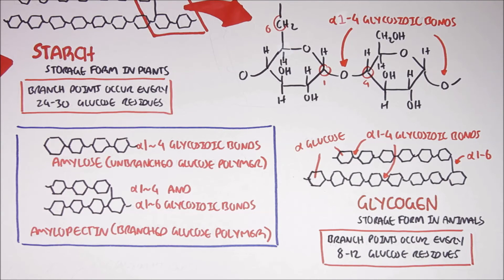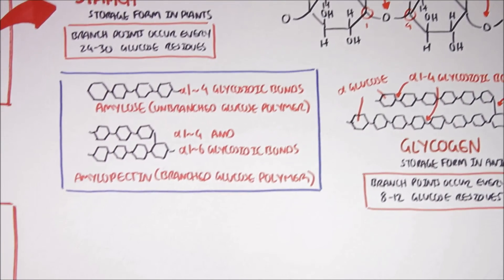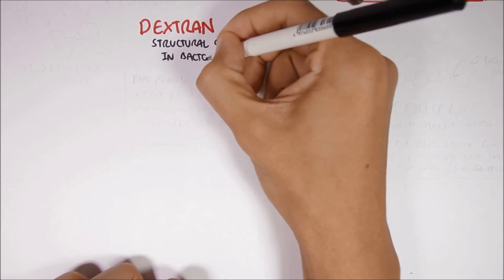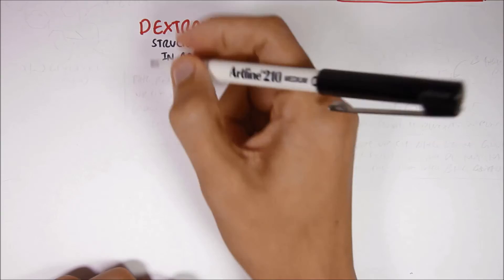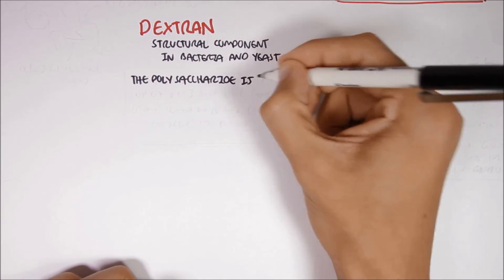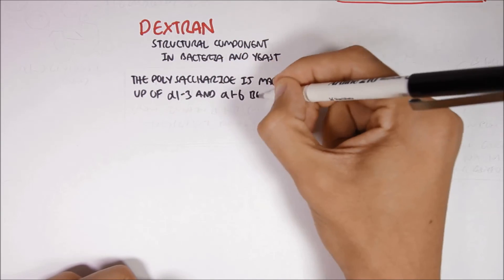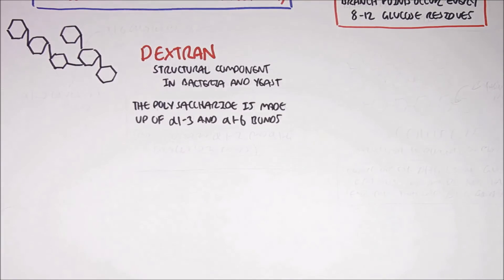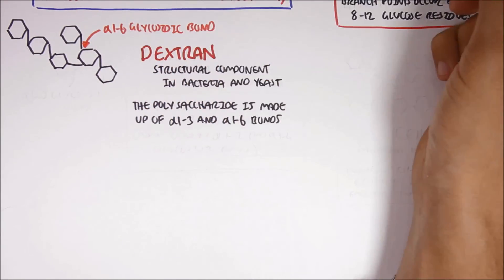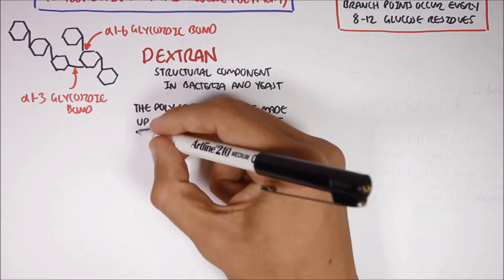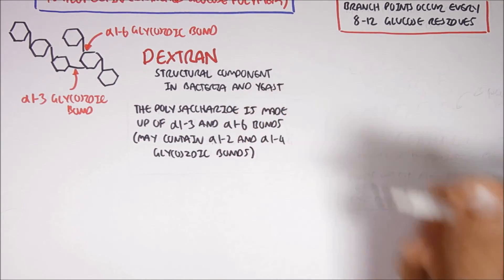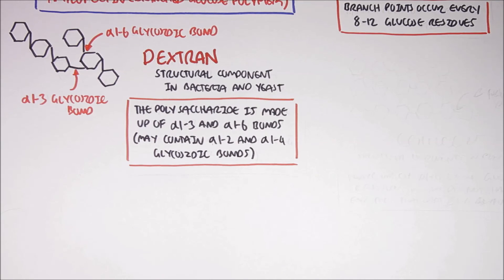Another type of polysaccharide is dextrans. Dextrans are structural components in bacteria and yeast. These polysaccharides are made up of alpha-1,2,3 and alpha-1,2,6 glycosidic bonds, though dextrans can also contain alpha-1,2,2 and alpha-1,2,4 glycosidic bonds.